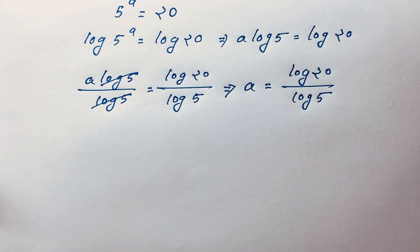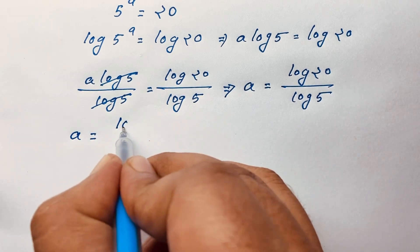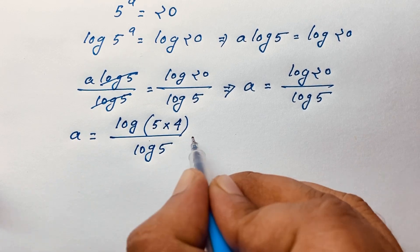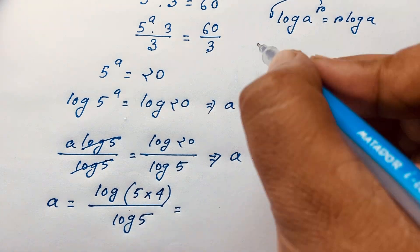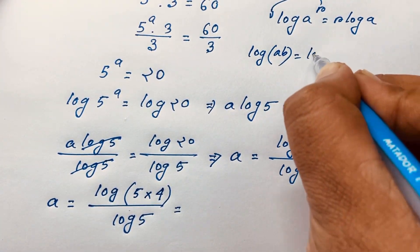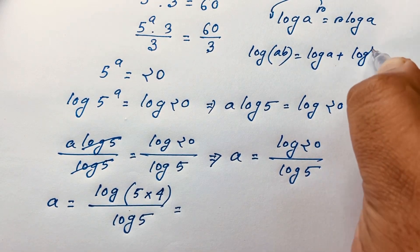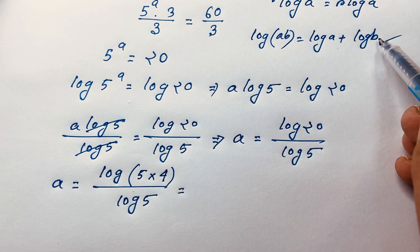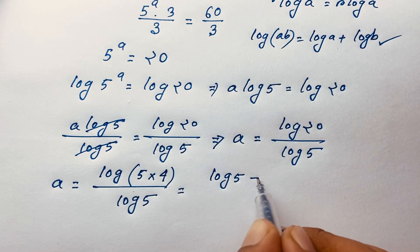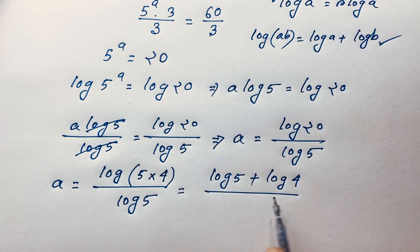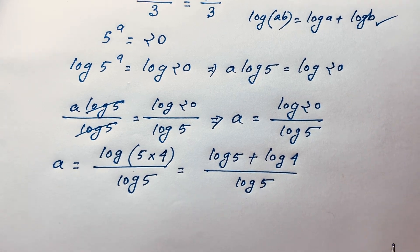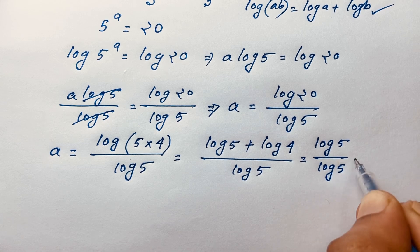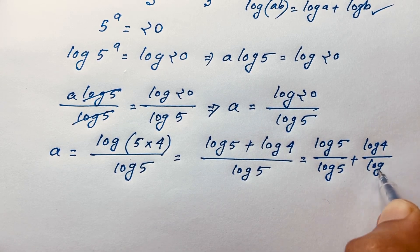Evaluating this expression: A equals log 20, which I can write as log of (5 times 4) over log 5. Using the product rule — log(A times B) equals log A plus log B — I expand log(5 times 4) to get log 5 plus log 4. So A equals (log 5 plus log 4) over log 5. Separating the fraction gives log 5 over log 5 plus log 4 over log 5.